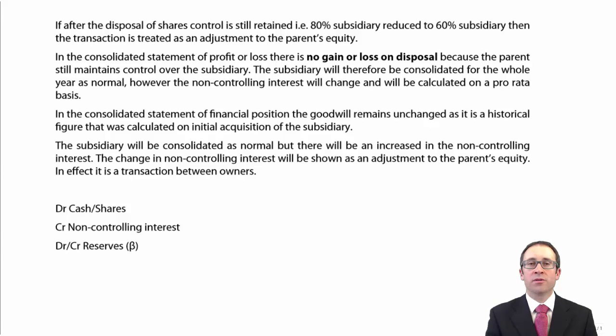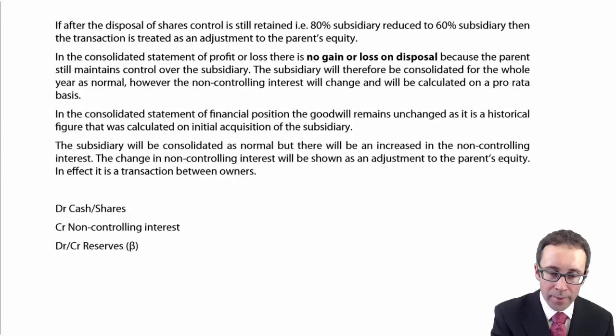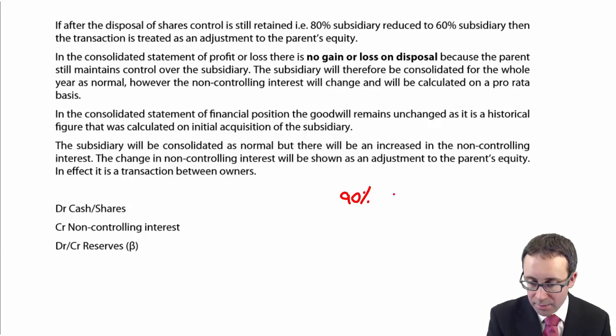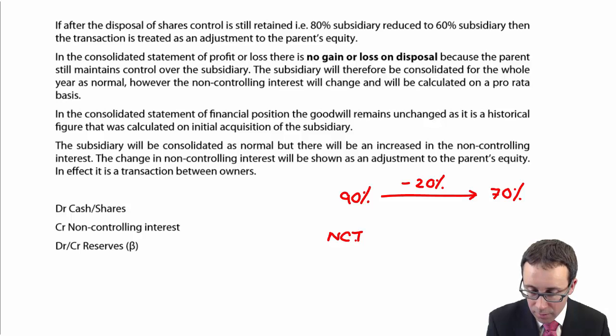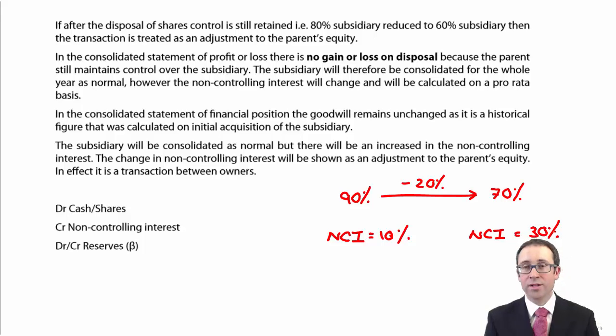Let's now look at another situation with regards to a step disposal. But in this instance, it's not whereby we lose control. It's whereby we dispose of shares, but we still have control. Let's say that we own 90%. And we decide to dispose of 20%. So we now own 70%. You do not have a gain or loss on disposal, because we have not stopped consolidating. We still have a subsidiary, but with changed levels of ownership.